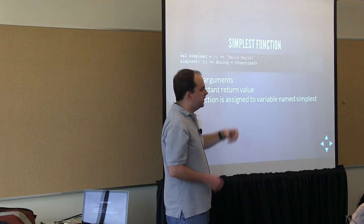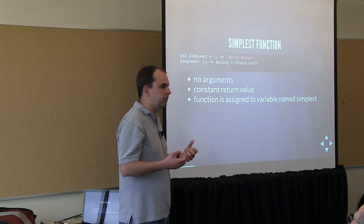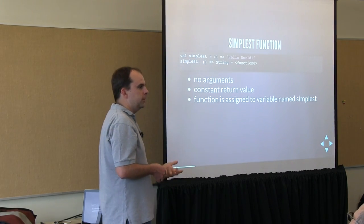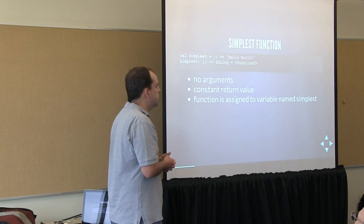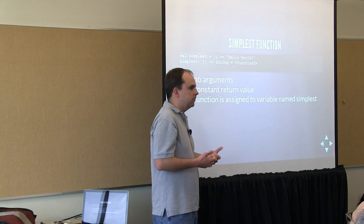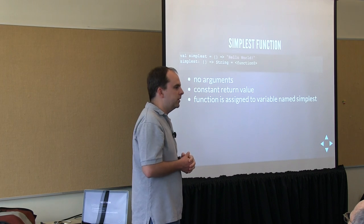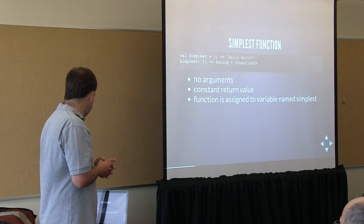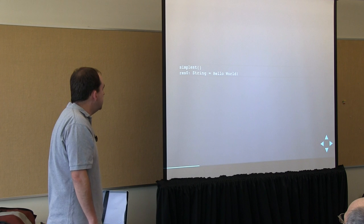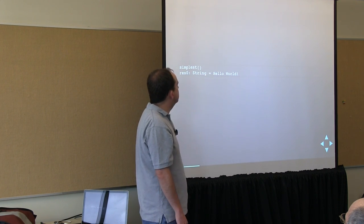Scala defines a class that represents functions taking various numbers of arguments. This takes no arguments so it's a Function0; when it takes one argument it's a Function1; two arguments, Function2. Because this is running on the JVM, and the JVM doesn't natively support functions as first-class citizens, we have to model this as an object, which is what Scala is doing. If we executed 'simplest' in the REPL, it would return the value 'hello world'.